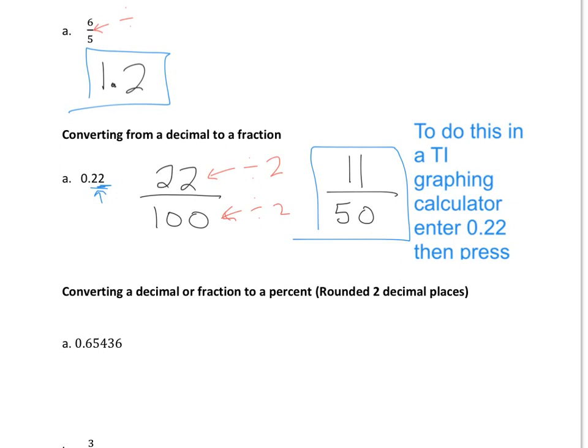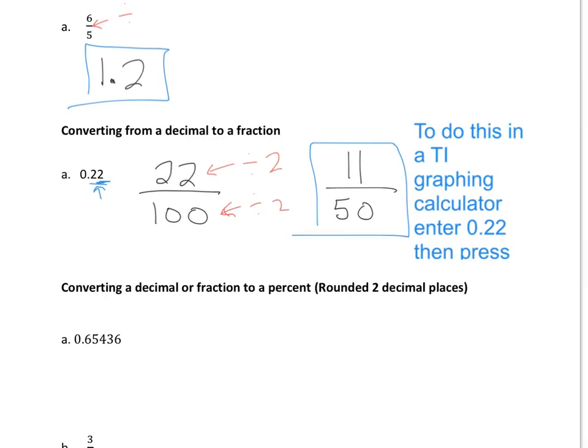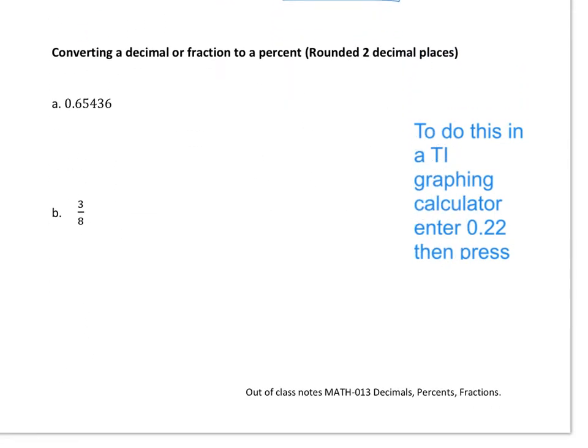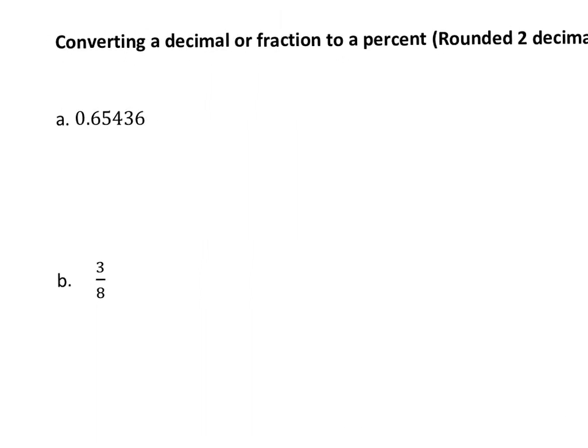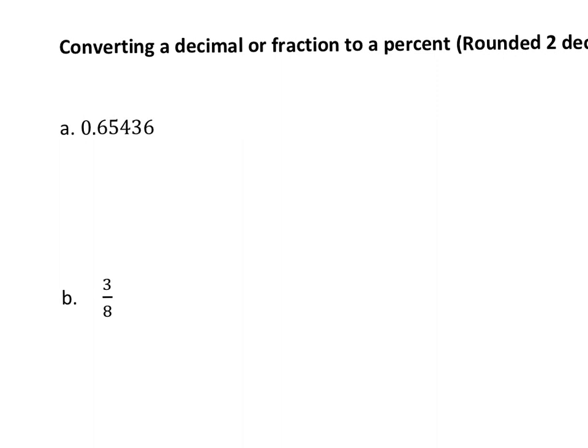So from here, what we're going to actually do is we're going to start working with percent. So let's scroll down. So we need to convert a decimal or fraction to a percent. It is always much, much easier to turn a decimal to a percent because all we're going to do is there's two ways to do this. You can either multiply by 100 or what we're going to do in this case is we're going to actually just move that decimal place over two places. That's the same thing.